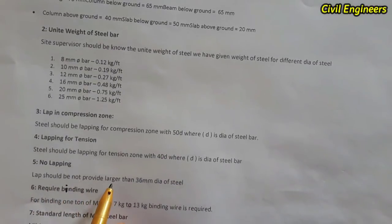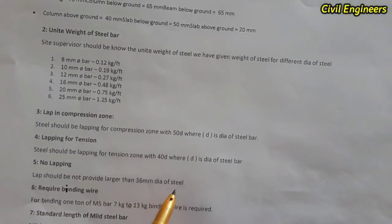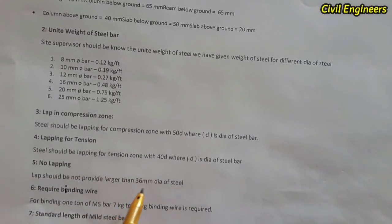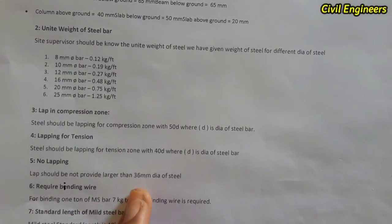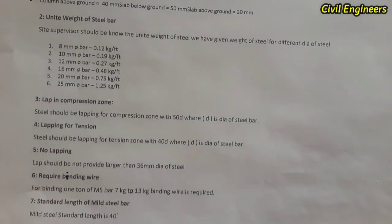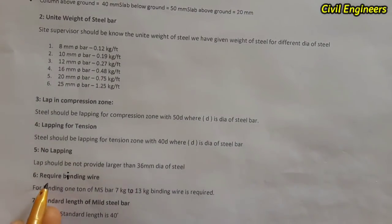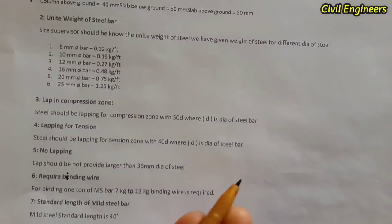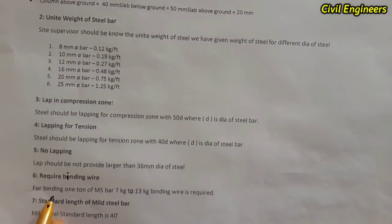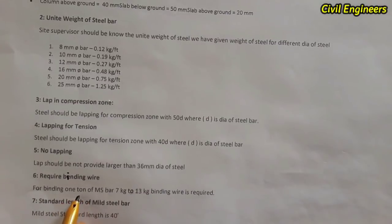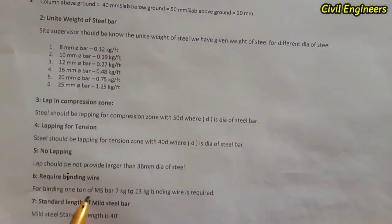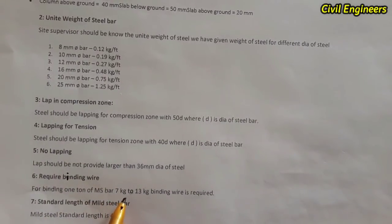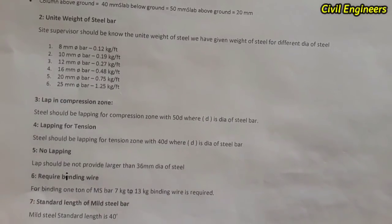The fifth term: lapping should not be provided for steel bars larger than 36 mm diameter. If the diameter is more than 36 mm, do not provide lapping, splice length, or development length. The sixth term is binding wire: for one ton (1000 kg) of mild steel bar, 7 to 13 kg of binding wire is required.